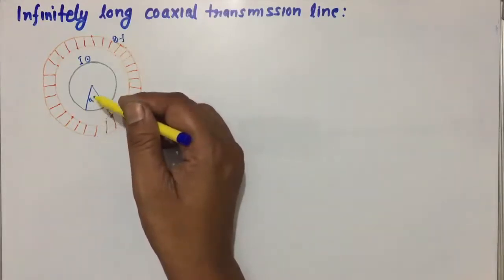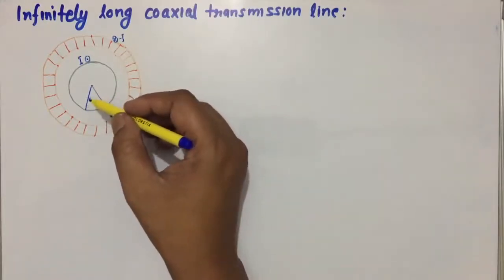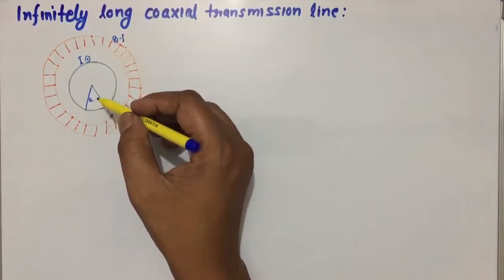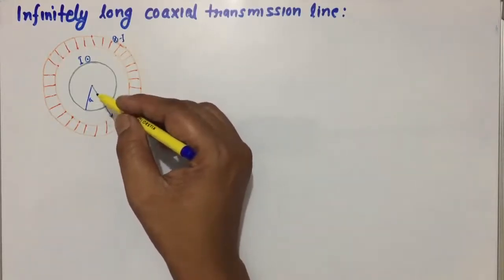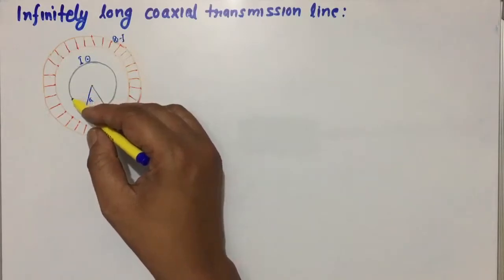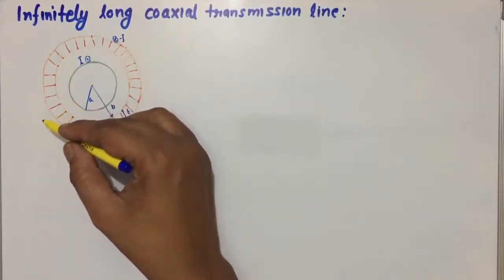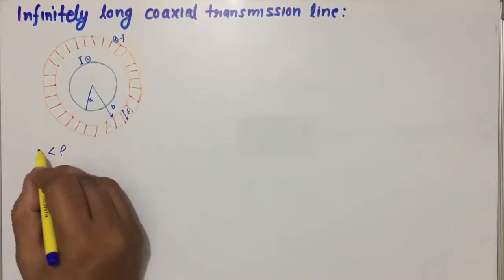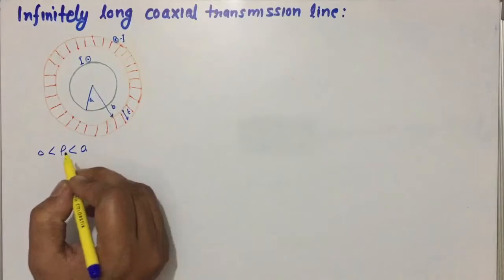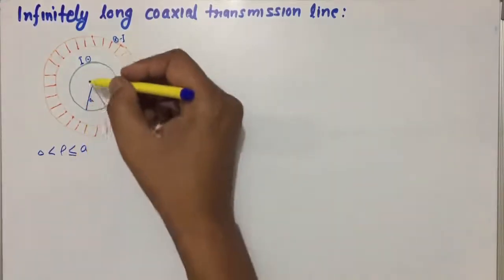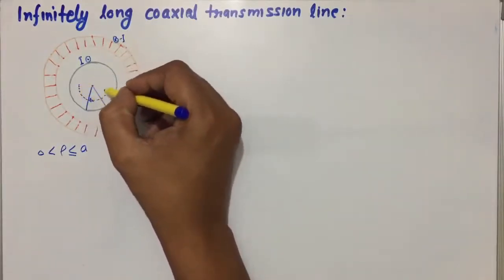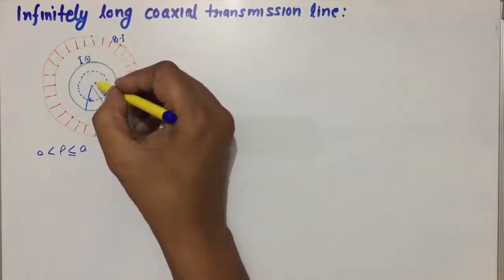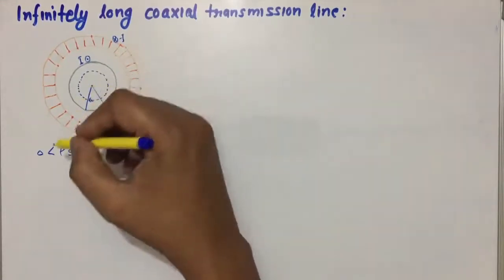The first conductor has radius A. To find the magnetic field intensity, we choose an Amperian path enclosing the current in the region of interest. There are four critical regions: inside the inner conductor, between the conductors, inside the outer conductor, and outside the cable. For Case 1, the observer lies at ρ less than A, so the Amperian path varies from 0 to A.